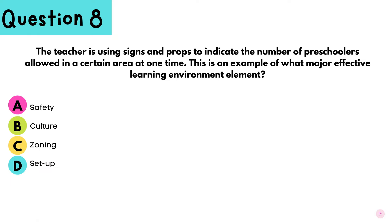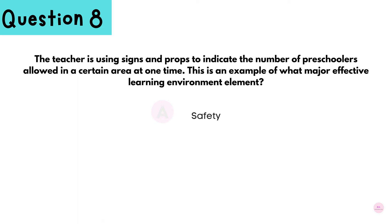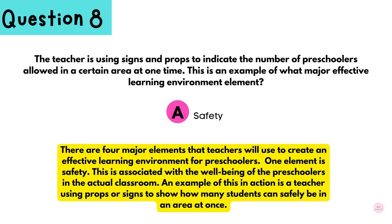Question 8: The teacher is using signs and props to indicate the number of preschoolers allowed in a certain area at one time. This is an example of which major effective learning environment element? A, safety; B, culture; C, zoning; D, setup. The answer is A — safety.